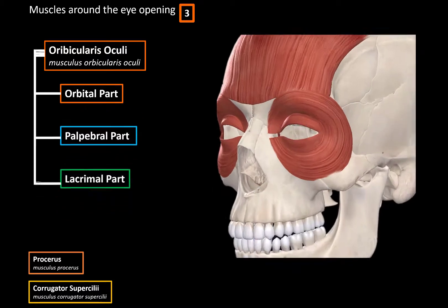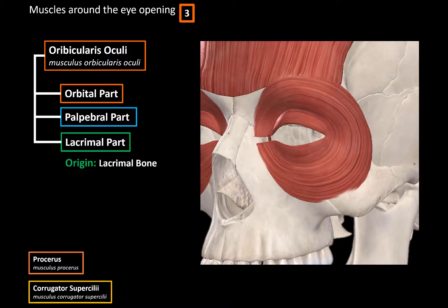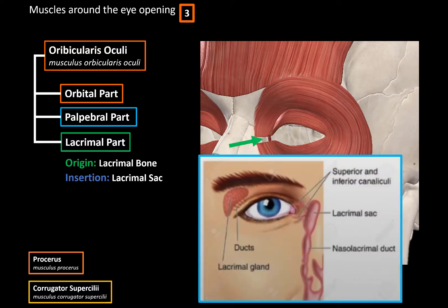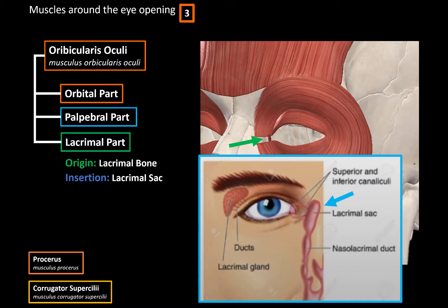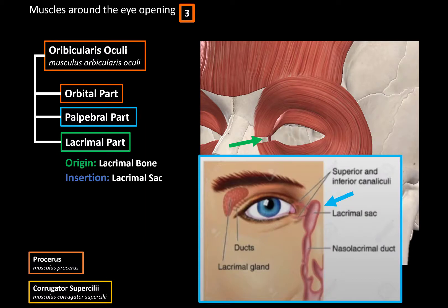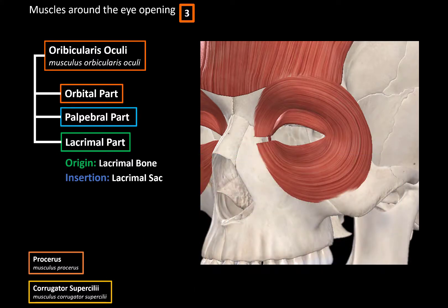The lacrimal part originates from the lacrimal bone and inserts at the lacrimal sac. What it does is dilate the lacrimal sac, which aids the drainage of tears from the eyes down through the nasolacrimal duct and into the nasal cavity. Tears are produced by the lacrimal gland, go to the lacrimal sac, and this muscle opens up the lacrimal sac so that excess tears can flow down into the nasal cavity.